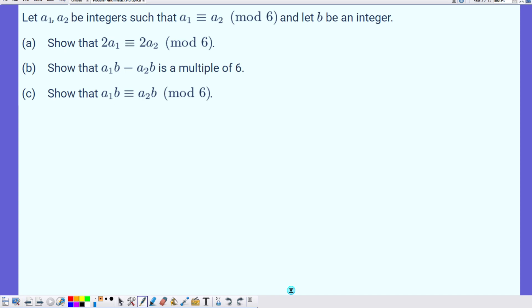Let A1 and A2 be integers such that A1 is congruent to A2 mod 6, and let B be some integer.